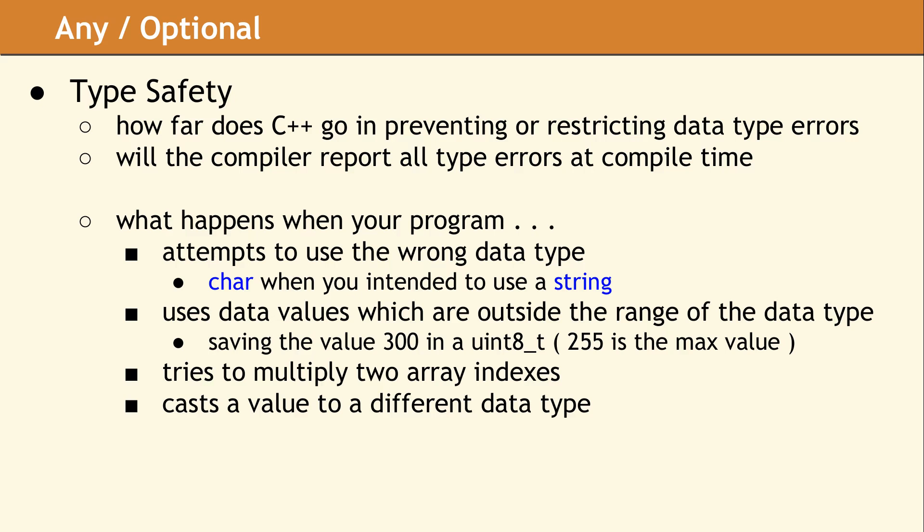In the case of a static cast, the compiler checks the source and destination data types at compile time to make sure the cast is allowed under the rules of the C++ type system. Whenever you are using a cast, be aware that you are overriding the type checking of the compiler, and take whatever steps you need to ensure your program remains type safe.